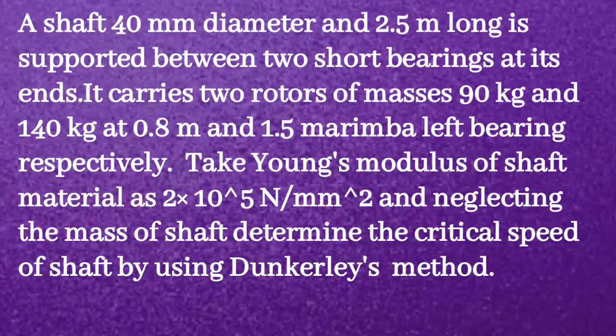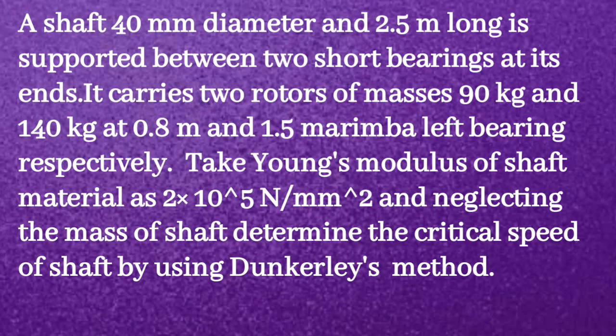Given question: a shaft 40 mm diameter and 2.5 m long is supported between two short bearings at its end. It carries two rotors of masses 90 kg and 140 kg at 0.8 m and 1.5 m from the left bearing respectively. Take Young's modulus of shaft material as 2 into 10 raise to 5 N per mm square and neglecting the mass of shaft, determine the critical speed of the shaft by using Dunkerley's method.